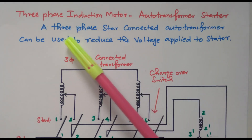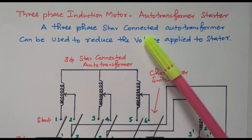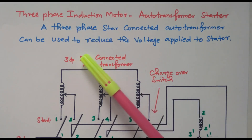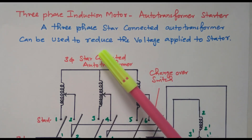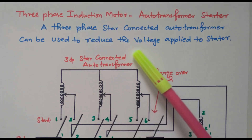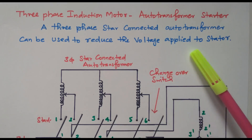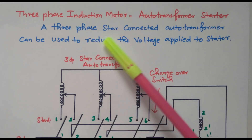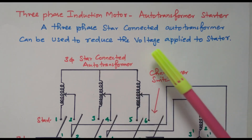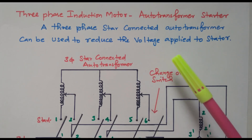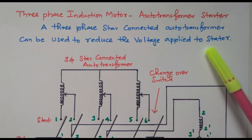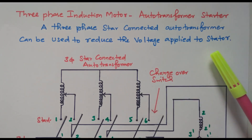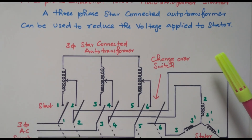The reduced voltage is provided using an auto-transformer. A three-phase star-connected auto-transformer can be used to reduce the voltage applied to the stator, so that we can also reduce the current taken by the stator.